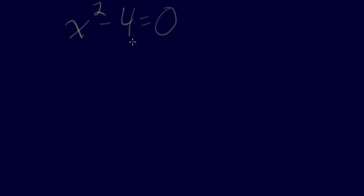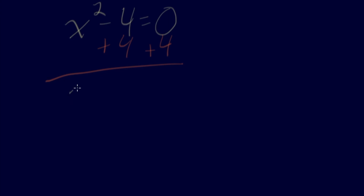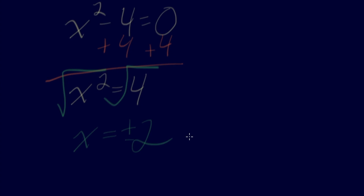The first example: x squared minus 4 equals 0. Most quadratics are set equal to 0. Since we have x squared, we need to use the square root. First, add 4 to both sides to get x squared equals 4. Then take the square root of both sides: the square root of x squared is x, and the square root of 4 is plus or minus 2. Check your answers to verify.